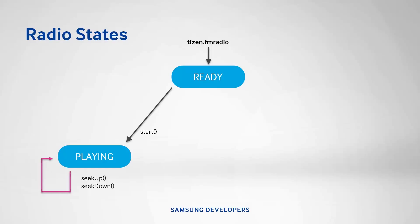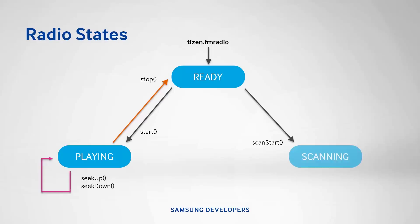To return the radio to the ready state, call the stop function. Back in the ready state, you can scan for all available stations by calling the scan start function. This takes the radio to the scanning state. While scanning, you can call scan stop to return the radio back into the ready state.